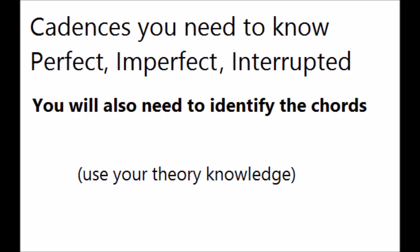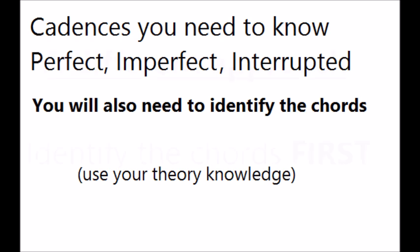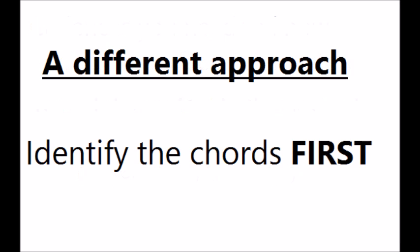For example, if you had a perfect cadence, you already know that the chords will be 5 to 1. So in this video, we will try a different approach — working backwards, as it were — to identify the chords first, from which it will be obvious what kind of cadence it is.